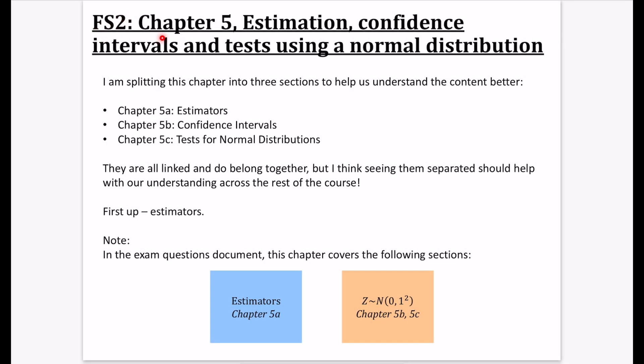Okay, we're on Further Stats 2, Chapter 5, which has a rather catchy name: Estimation, Confidence Intervals, and Tests Using a Normal Distribution. Because that name is so long and hard to remember, I've split this chapter into three sections to help us understand the content better and see where it sits more broadly in the module.